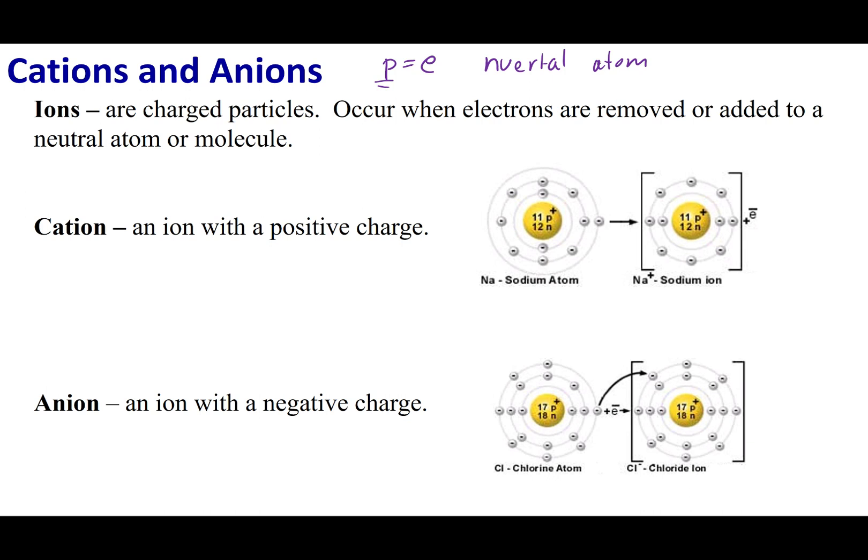If I lose or gain electrons, I can form two different types of ions. One is called a cation, not a cation. A cation is something with a positive charge. And so, if I look at protons and electrons, and if they're equal, they're neutral. If I want a positive charge, well, I need to have more positive things than negative things. Or in other words, I need to have more protons than electrons. And the only way that's going to occur is if I lose electrons.